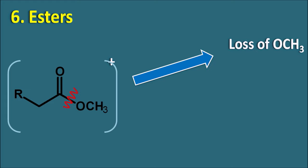Next one is nitriles. Nitriles can undergo simple fragmentation — they can undergo loss of a proton to form a rearranged fragment ion with m/z at M-1. Similarly, nitriles can undergo McLafferty rearrangement observed at m/z 41.